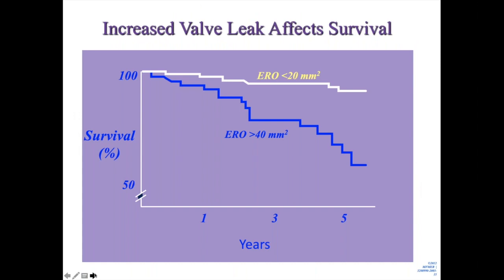We can quantify the amount of mitral regurgitation by echocardiography. In patients with an ERO greater than 40 — meaning more leak — they have worse survival. Even within the severe range, as mitral regurgitation gets more severe, the likelihood of survival decreases. More leak, worse survival.